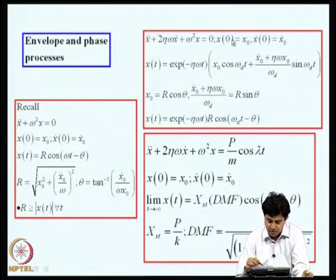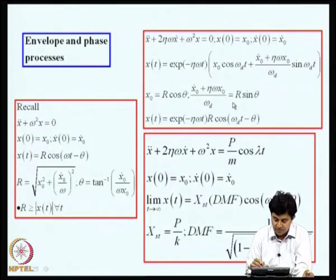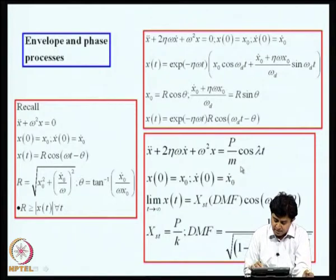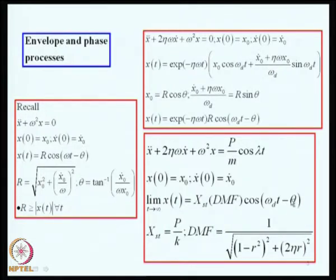For a damped free vibration problem, the response can be written as e^(-zeta*omega*t) * R * cos(omega_d*t - theta), where R is described in terms of the system natural frequency, damping, and initial conditions. The quantity R * e^(-zeta*omega*t) can be thought of as the envelope for this response. If the same system is driven harmonically, the response in steady state can be written as X_st * DMF * cos(omega_d*t - theta), where X_st is the static response and DMF is the dynamic magnification factor. The quantity X_st * DMF can be thought of as the envelope, and theta is the phase angle, dependent on the system natural frequency, damping, and driving frequency.